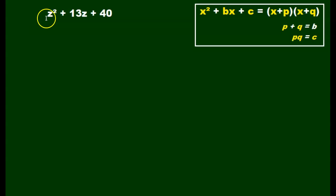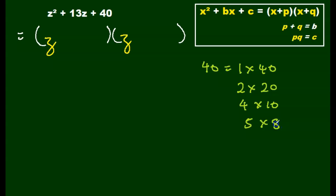Let's try this one. Again, nothing in front of our squared term, so I'm going to write it as double parentheses, and I'm going to put my z and my z in there, because z times z gives me z squared. Then I'm going to look at my factors of 40. 40 is 1 times 40, 2 times 20, 4 times 10, 5 times 8.